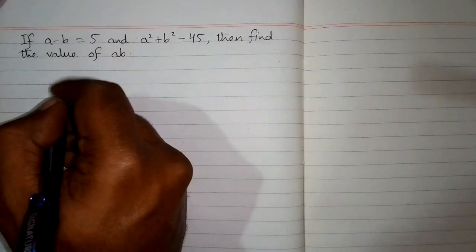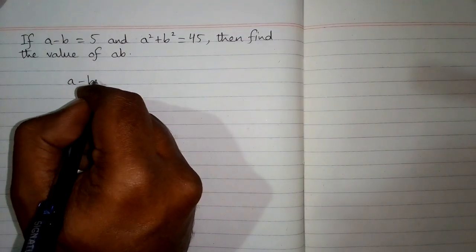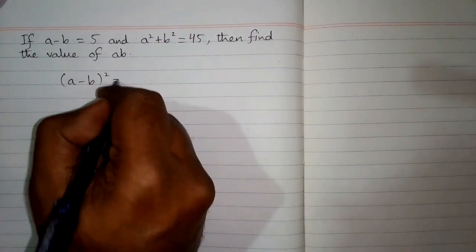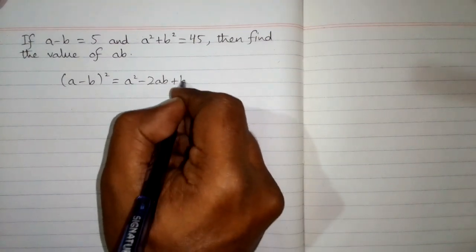In order to solve this problem, we can use an algebraic identity which is a minus b whole square is equal to a square minus 2ab plus b square.